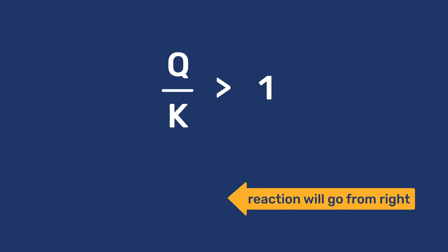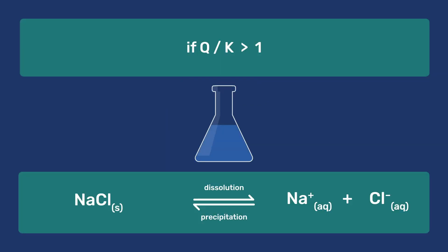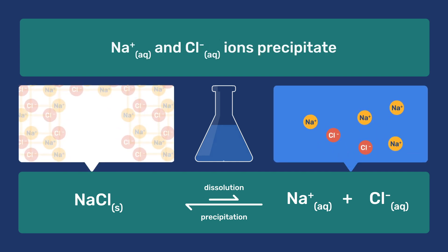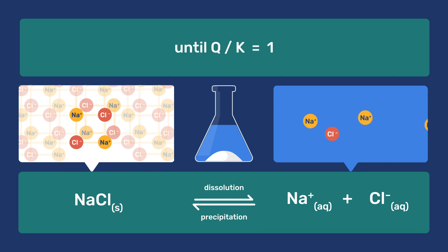If Q over K is larger than 1, then the reaction would go from right to left to reach equilibrium. In our example of sodium chloride, it would mean that the solution is supersaturated and that sodium chloride would precipitate, reducing solution concentrations until equilibrium would be reached.